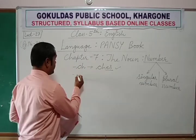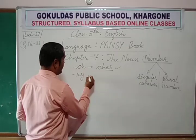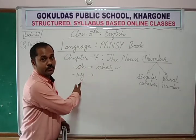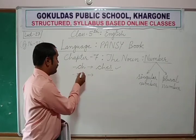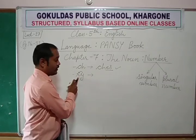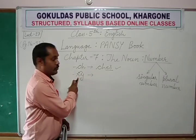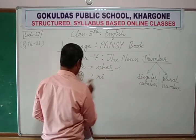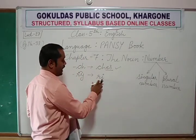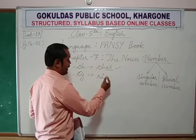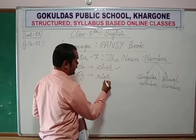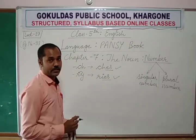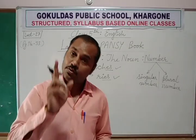'Story' — when a noun ends with Y and before Y there is a consonant, we change Y to I and add 'es'. So 'story' becomes 'stories'. Always remember those rules.